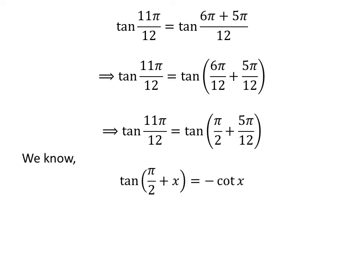We know the trigonometry identity tangent of pi upon 2 plus x is equal to minus cotangent of x. The verification of this identity is given in the video appearing in the upper right corner of this video, and the link is also given in the description section. So, tangent of 11 times pi upon 12 is equal to minus cotangent of 5 times pi upon 12.